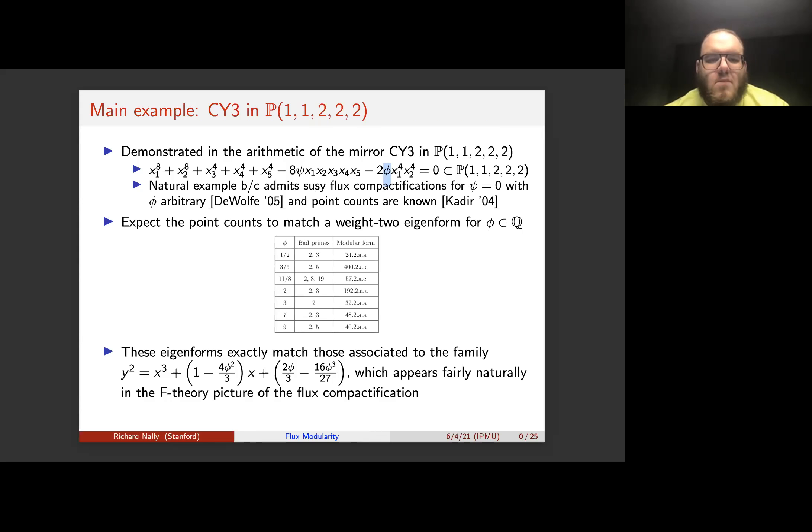...we expect the point counts to encode the Fourier coefficients of a weight-two eigenform. And here I have a representative sample of some rational values of φ, and indeed you can see here that based on the known point counts, we were able to find a weight-two eigenform for every rational φ we checked.